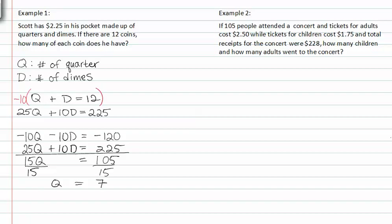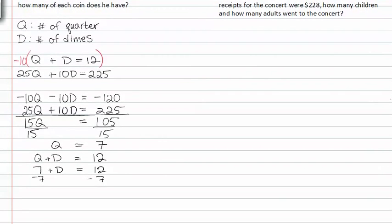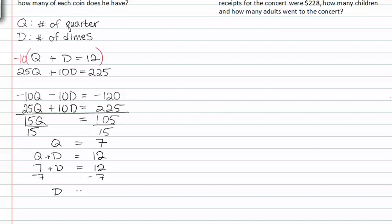Since we know that Q plus D is equal to twelve, and we know that Q is now seven quarters, we could subtract seven from both sides and discover that D is equal to five. So there are seven quarters and five dimes.